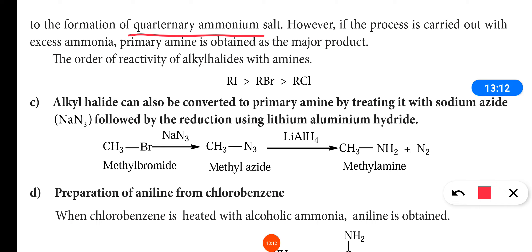However, if the process is carried out with excess of ammonia instead of excess alkyl halide, it will form only primary amine as the major product. The order of reactivity of alkyl halides is: alkyl iodide > alkyl bromide > alkyl chloride.